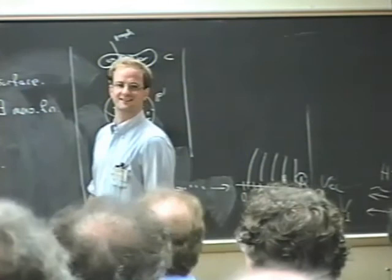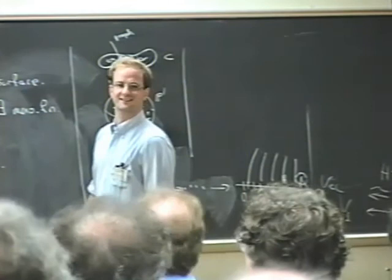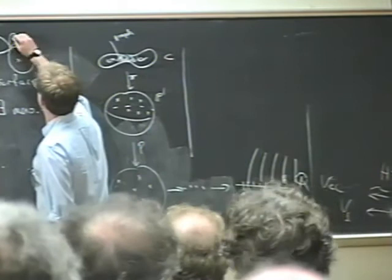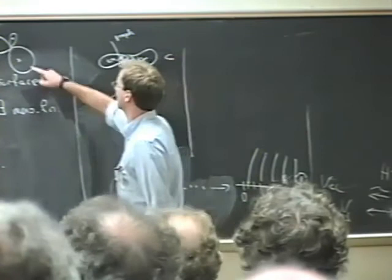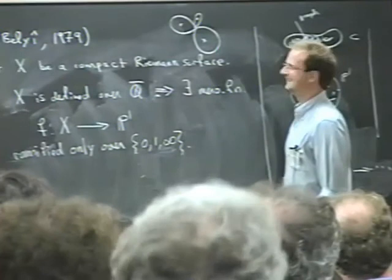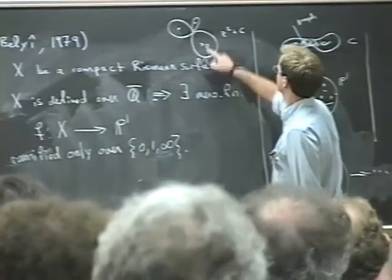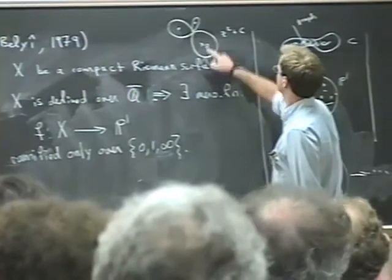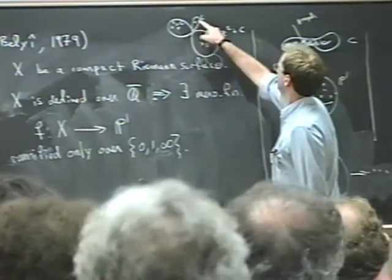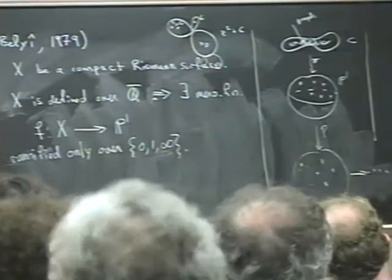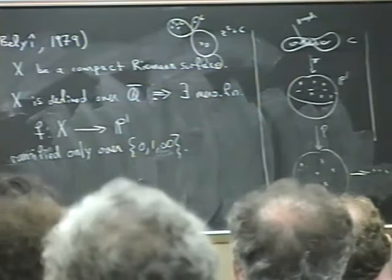I tried to do this for the Douady rabbit that we saw this morning in Hubbard's talk. The Douady rabbit is a certain quadratic polynomial c squared plus c where the critical point of the origin is period 3. So I wanted to apply Belyi's theorem in this particular example and actually do the construction.